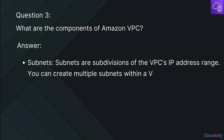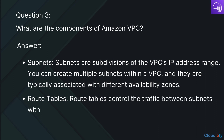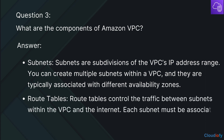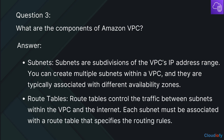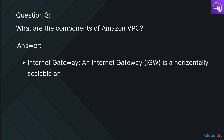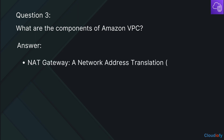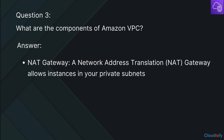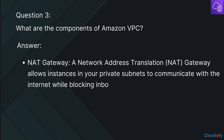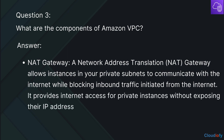You can create multiple subnets within a VPC, and they are typically associated with different availability zones. Route tables control the traffic between subnets within the VPC and the internet; each subnet must be associated with a route table that specifies the routing rules. An internet gateway is a horizontally scalable and highly available AWS-managed gateway that allows communication between your VPC and the internet. A NAT Gateway — network address translation gateway — allows instances in your private subnets to communicate with the internet while blocking inbound traffic initiated from the internet, providing internet access for private instances without exposing their IP addresses to the public.